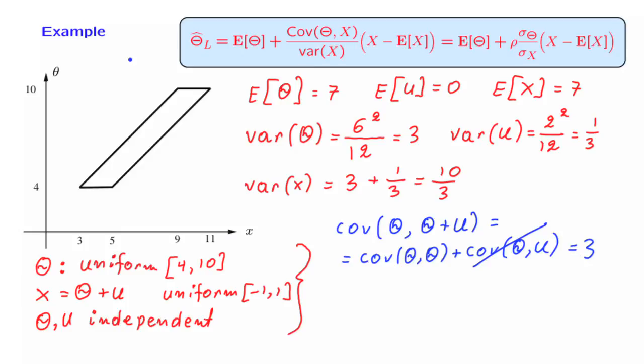And so now we have all the pieces of information that we need, and we can proceed and write down the form of the linear estimator. The expected value of theta is 7. Then the covariance of theta with x is 3 divided by the variance, which is 10 over 3. So this ratio becomes 9 tenths. And then x minus the expected value of x gives us this term.